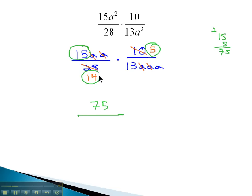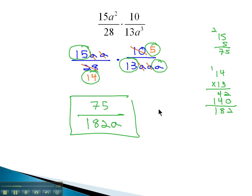In the denominator, 14 times 13 times a is left. Then you might need to do the 14 times 13 off to the side by hand, to get our solution 182, and don't forget the a. 75 over 182a.